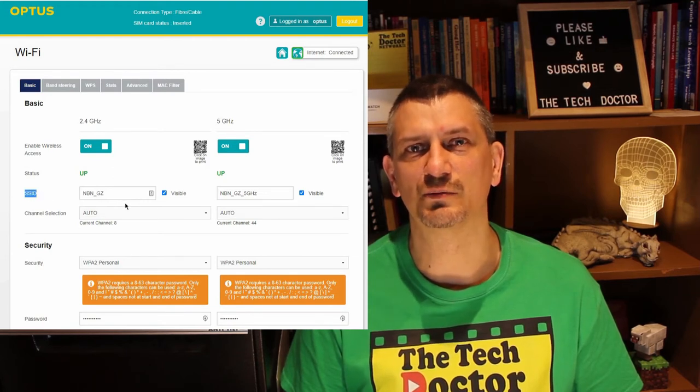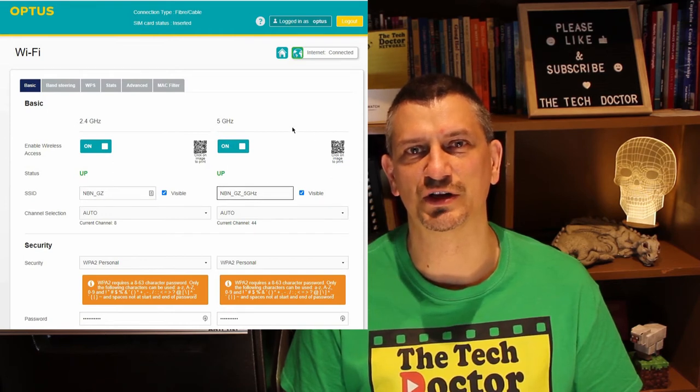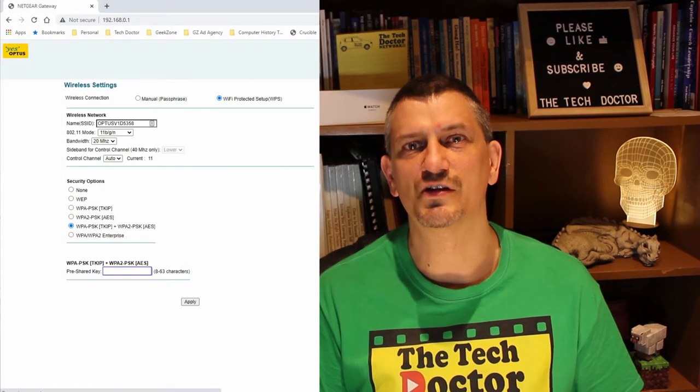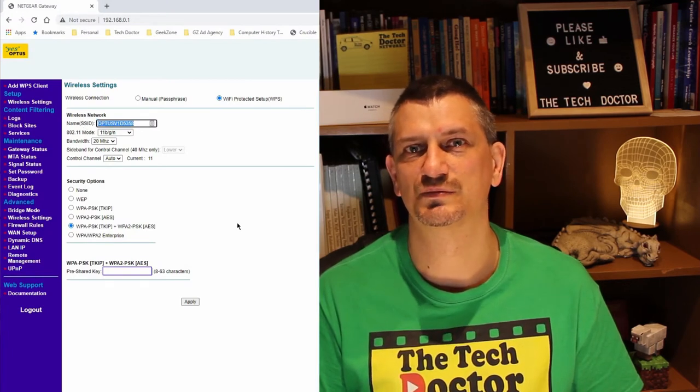My router will let me give different names to both the 2.4 gigahertz and the 5 gigahertz spectrums. Yours may not. This older router is 2.4 gigahertz only, so only has one name to change.